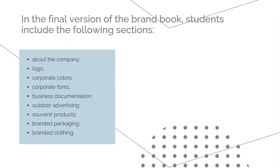The final work of the course, Branding Theory, Design and Identity, is the formation of a company's brand book on the chosen topic, on which students work individually during the course. Valid project presentation options include a printed version, an electronic version in PDF, or a brand book in the form of a website. The brand book includes the following sections: about the company, logo, corporate colors, corporate fonts, business documentation, outdoor advertising, souvenir products, branding packaging, and branding clothes. Each student presents their work according to all the requirements of project presentation in IT companies.